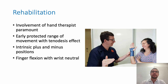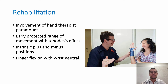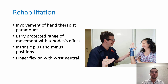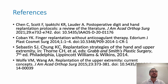Whether it's a replantation or terminalisation that's been performed, rehabilitation is crucial to try and regain the patient's maximal function — so involvement of the hand therapist is paramount. It does depend on the level at which the surgery or injury has been performed. But for a lot of injuries, an early range of protective movement with tenodesis effect can be initiated, followed by holding the hand in intrinsic plus and intrinsic minus positions, followed by a couple of weeks later going on to finger flexion with the wrist in neutral position, and then at four to six weeks returning to more full active range of movement. There are some references listed. It's a big topic, but hopefully that's given an overview on replantation and amputation in traumatic situations in the hand.